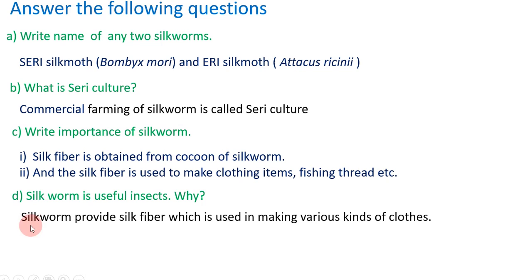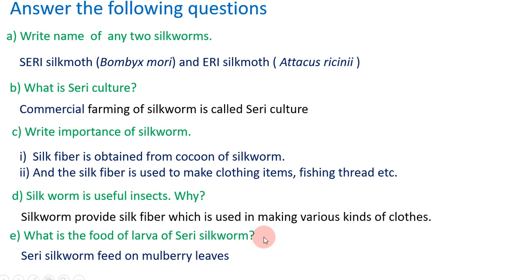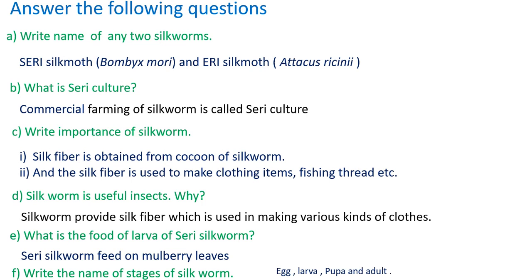Silkworm is a useful insect because it provides silk fiber which is used in making various kinds of clothes. The food of larvae of silkworm: seri silkworm feeds on mulberry leaves. The stages of silkworm are egg, larva, pupa, and adult. These are the important short questions.